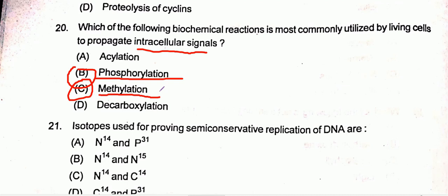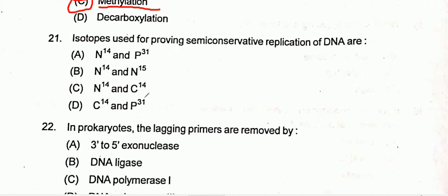Question twenty-one: regarding semi-conservative replication, the isotopes used for proving semi-conservative replication of DNA — in semi-conservative replication two isotopes are used, so that will be option B, that is N14 and N15 — one heavy isotope and one normal.